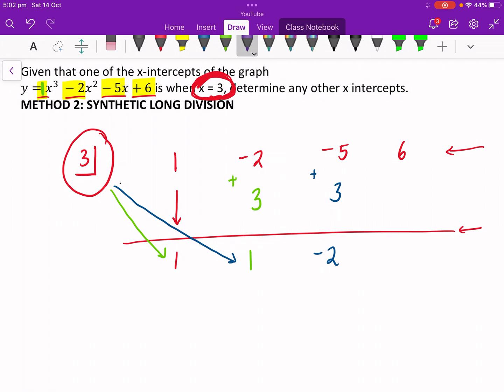We're going to do it one more time. 3 times by negative 2 is negative 6. Add them up. You get zero.